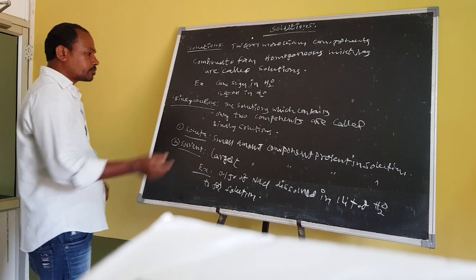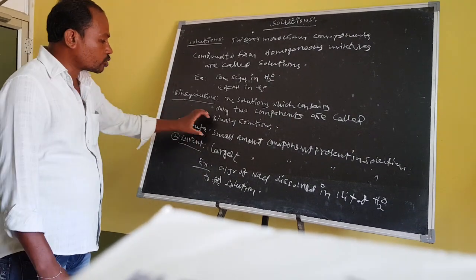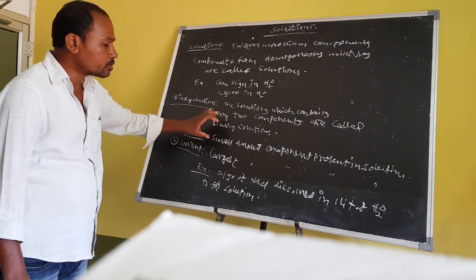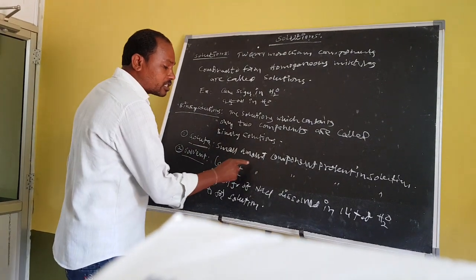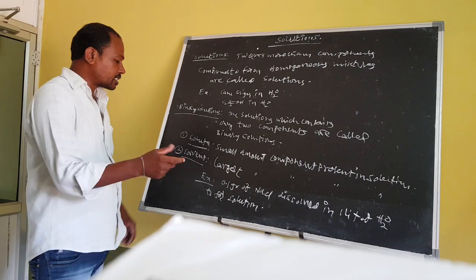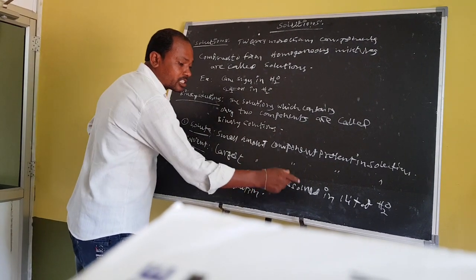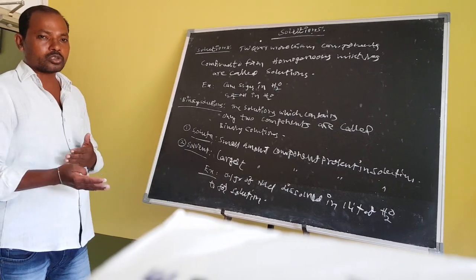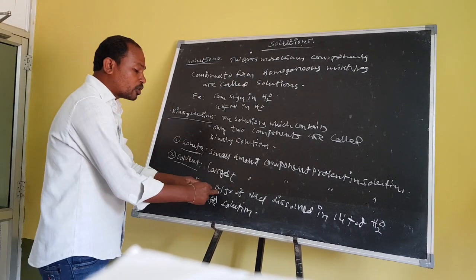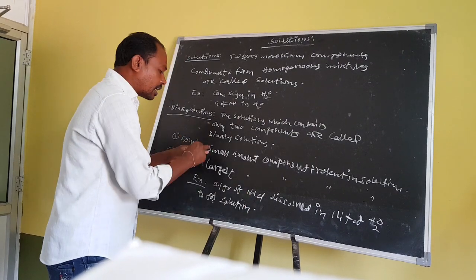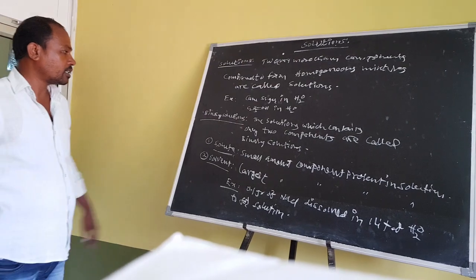Every binary solution contains two components: number one, solute, and number two, solvent. Solute means less amount or small amount of component present in the solution. Solvent means large amount of component present in the solution. Example: 0.1 gram of sodium chloride dissolved in 1 litre of water to form a solution. Sodium chloride is the solute and water is the solvent.